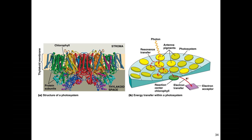Visually, the yellow part represents the thylakoid membrane, and the different colored regions are the proteins. Within those proteins are the pigment molecules about to be excited by a photon of light. That photon will come in contact with one of those pigment molecules, the pigment molecule will lose an electron, and that electron will go to a higher energy level.